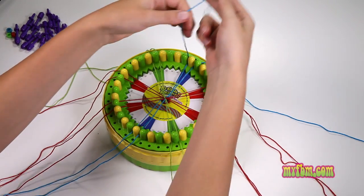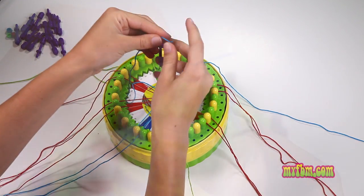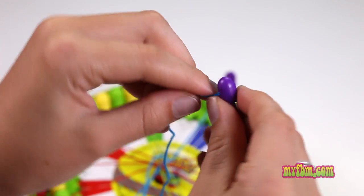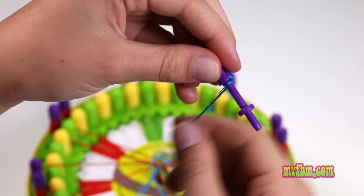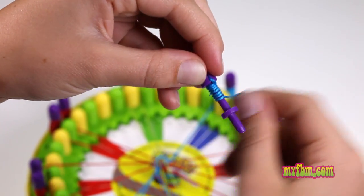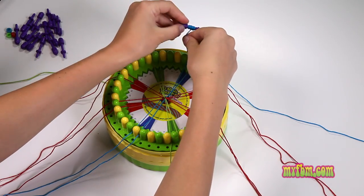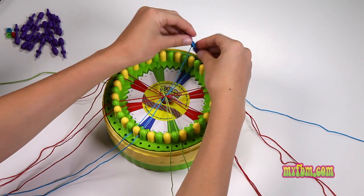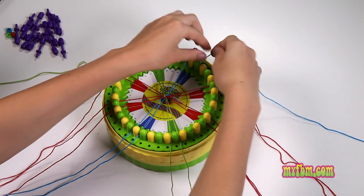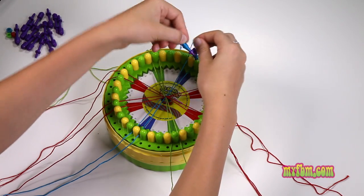You can start with any string. Take a bobbin, feed it through the top, and then simply wrap it around. Once the string gets short enough, you can put it back into the corresponding slot and grab the next string. Repeat this until each string has a bobbin on it.